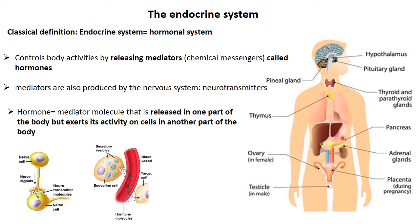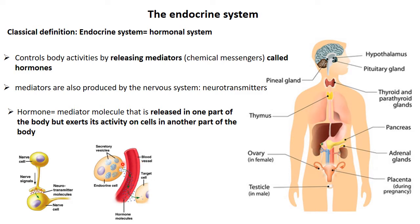Once released into the blood circulation, hormones can circulate in the blood to reach a target which can be an organ situated in another part of the body. So a hormone is defined as a mediator molecule that is released in one part of the body but exerts its activity on cells in another part of the body. The endocrine system is also defined as the hormone system, releasing chemical messengers or mediators — the hormones — that migrate through the blood to reach their target.